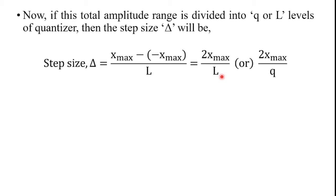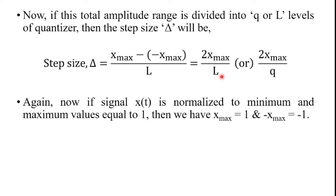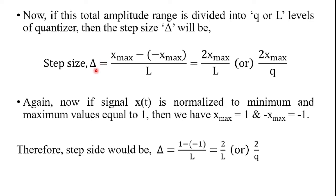Now if the input signal X(t) is normalized so that its minimum and maximum values are equal to minus 1 and plus 1, then X_max = 1 and minus X_max = minus 1. Applying this condition to the step size equation, we get the step size delta = 2 / L. This step size value is for the normalized signal.